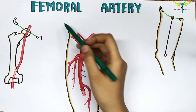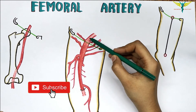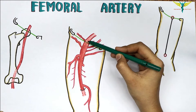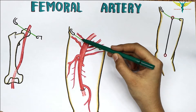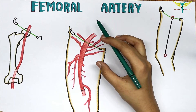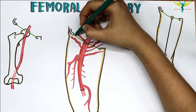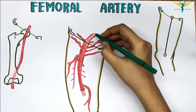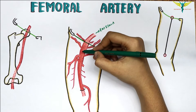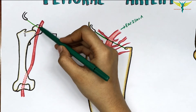The femoral artery is the chief artery of the lower limb. It is the continuation of the external iliac artery, and it enters the femoral triangle behind the inguinal ligament at the mid inguinal point. The mid inguinal point is the midpoint of the inguinal ligament. The femoral artery is the continuation of the external iliac artery, running downward and medially.